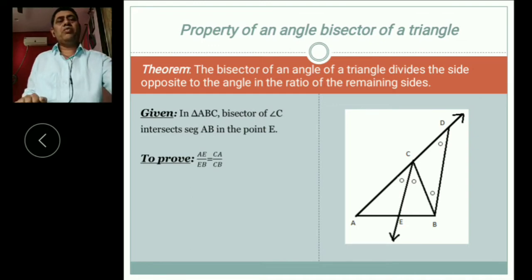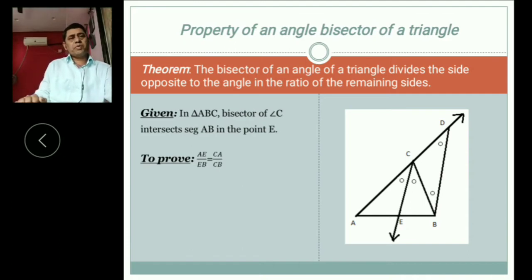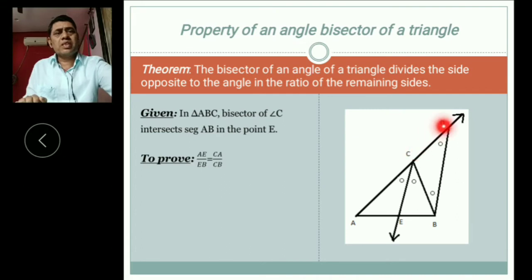Then we get a new figure that is ABD. In that CE is parallel to DB. And what is our Basic Proportionality Theorem: AE divided by EB is equal to AC divided by CD. But in our proof or to prove AC divided by CB.